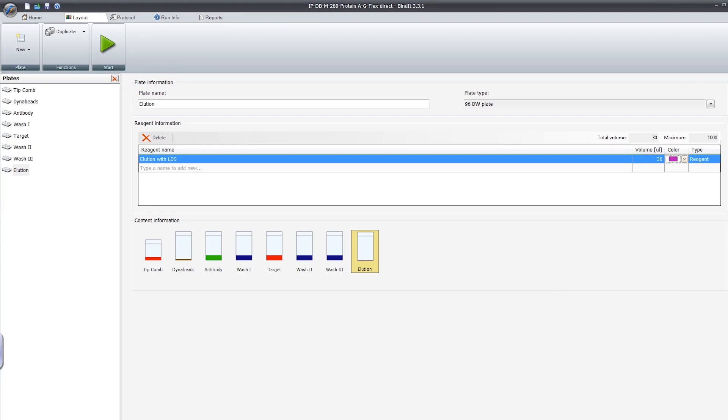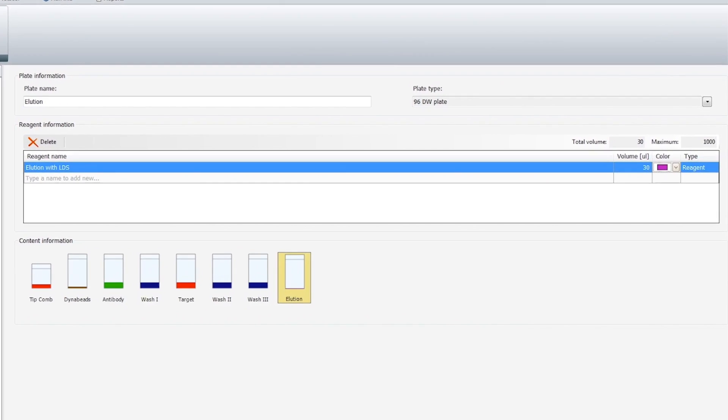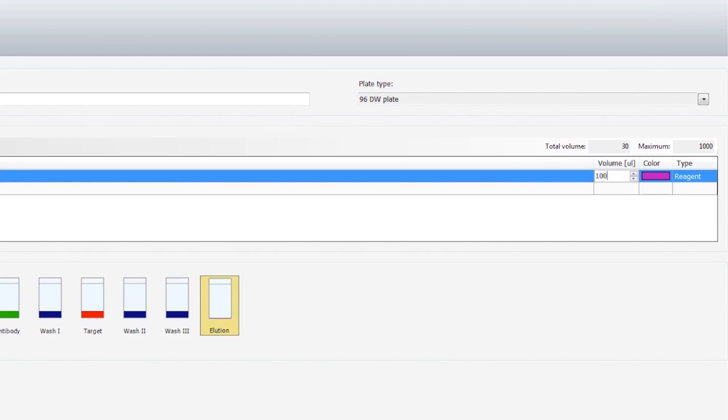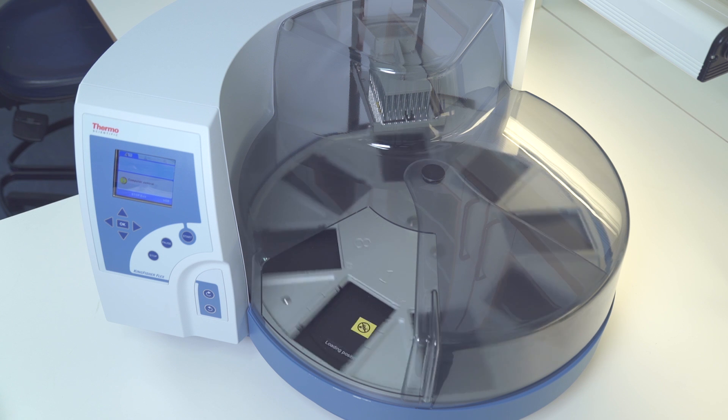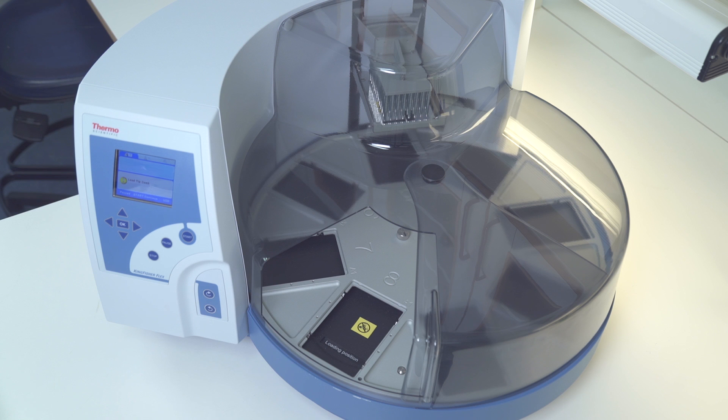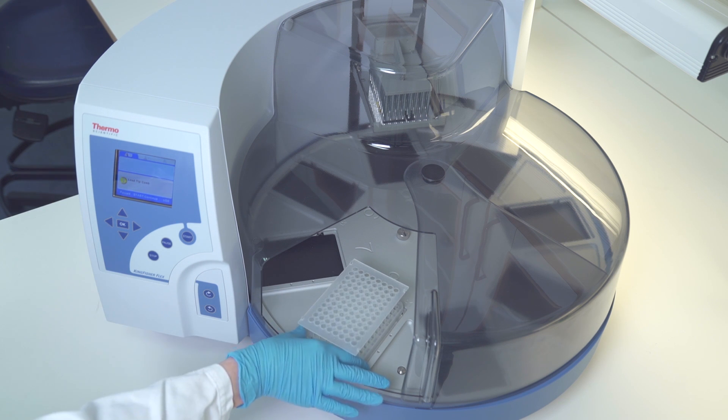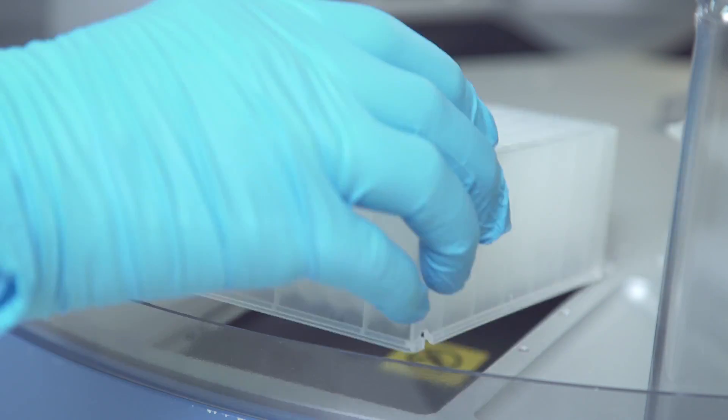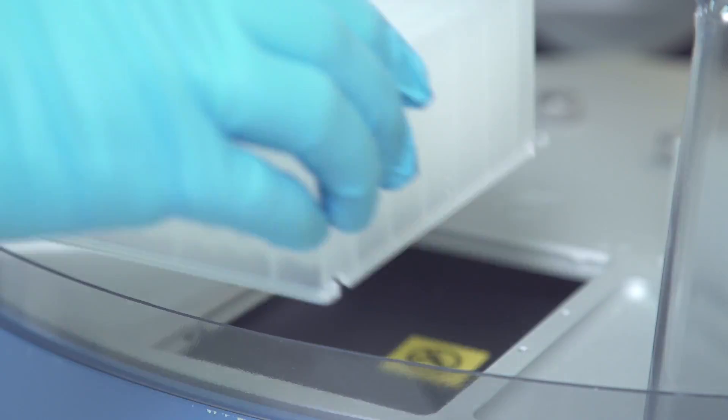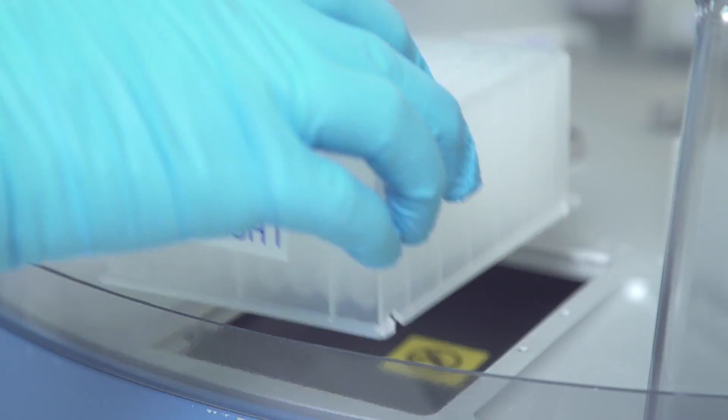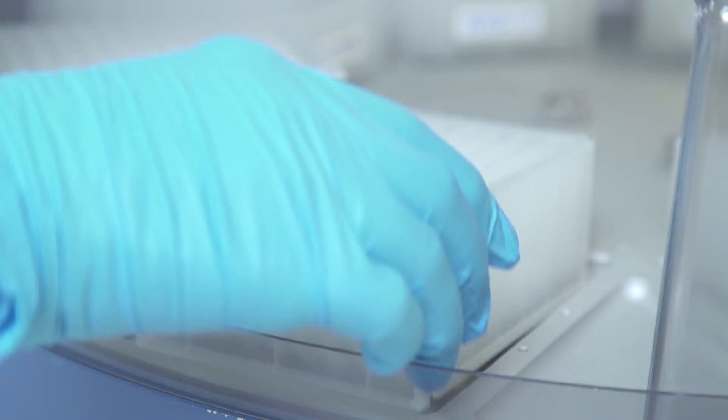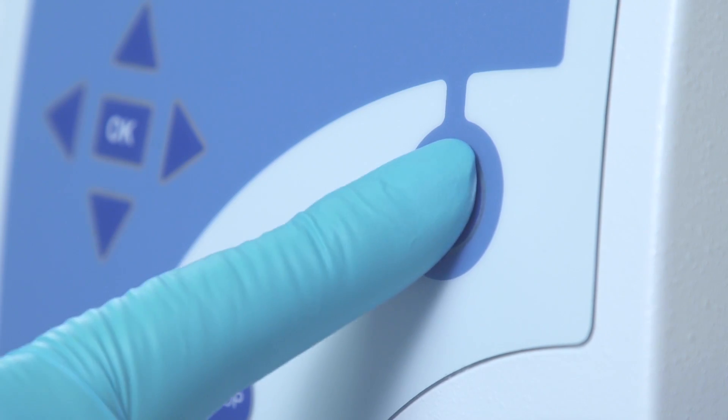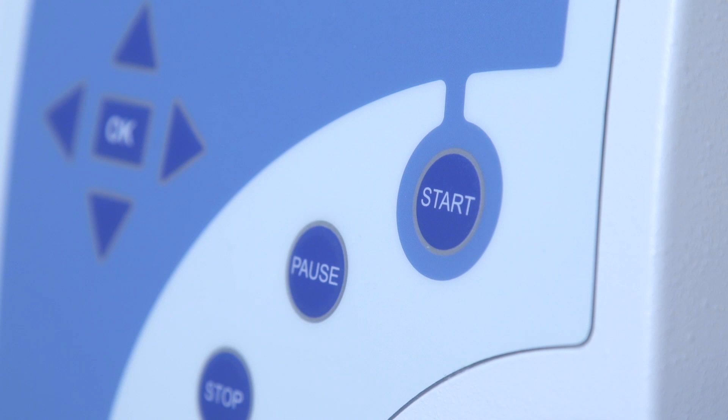You can use the standard 40-minute protocol as is or easily modify it and save your own custom versions with the user-friendly BIND-IT software. Loading the plates is easy and Kingfisher will tell you which plate to load into each position. Load the tip combs and the seven plates in sequence. When all plates are loaded, press START to initiate the IP protocol.